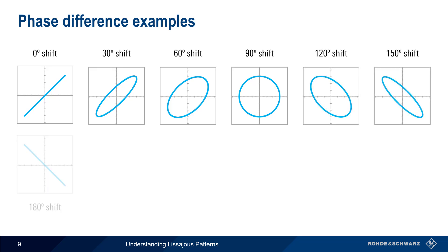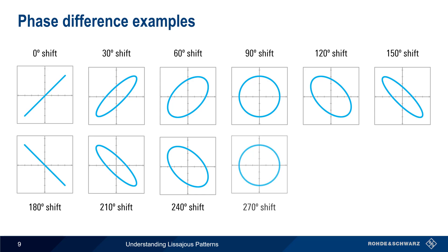The oval then starts sloping in the opposite direction until it becomes a straight line with a negative slope at 180 degrees. A similar progression occurs in the opposite direction until the oval eventually returns to being a straight line after the phase has shifted the full 360 degrees.